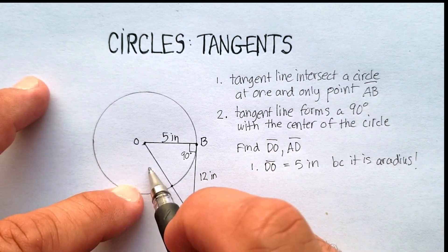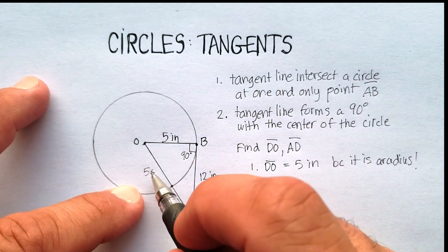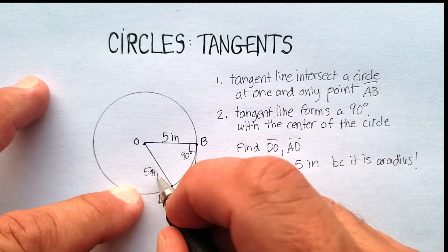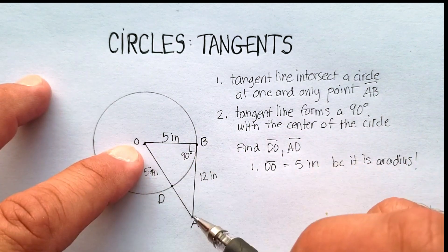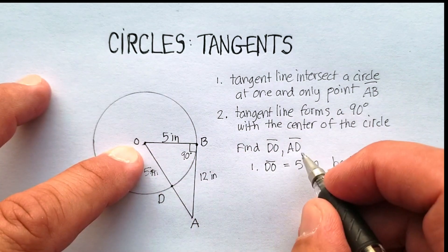Now, the other thing we can do, let me just leave that as 5 inches. The other thing we can do is we notice that we have a right triangle. So we can use, to find A-D,